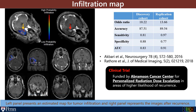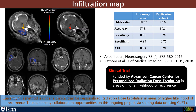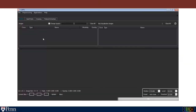The left panel presents an estimated map of tumor infiltration and the right panel represents images after recurrence. Currently this method is under a clinical trial for personalized radiation dose escalation in areas of higher likelihood of recurrence. Since there are many collaboration opportunities on this ongoing project, we are sharing data or using CAPTIC-A.